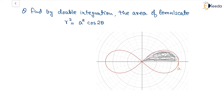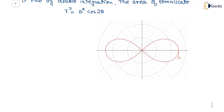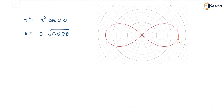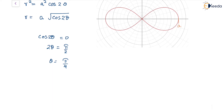Since the expression is r² = a² cos(2θ), taking the square root gives r = a√(cos 2θ). Now cos(2θ) cannot be negative; it must be zero or positive. The least value is cos(2θ) = 0, which occurs when 2θ = π/2, so θ = π/4. The maximum is 1, occurring at θ = 0.